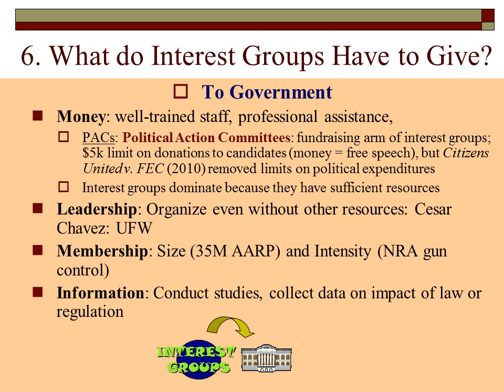What do interest groups have to give? First and most importantly, money. Although money doesn't necessarily buy everything, if you're an interest group with no money, it's pretty much guaranteed you'll get nothing done. Money pays for well-trained staff, professional assistance, managers, research and development, advertising, brochures, and pamphlets — not only for donating directly to candidates.